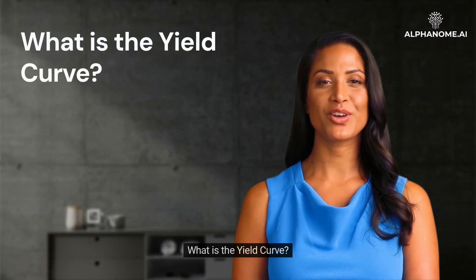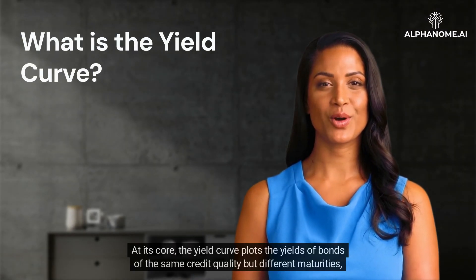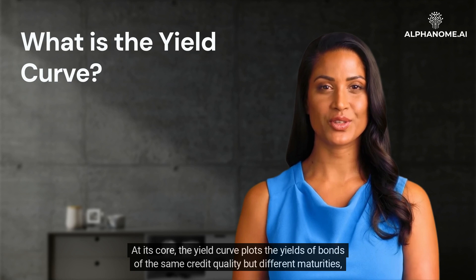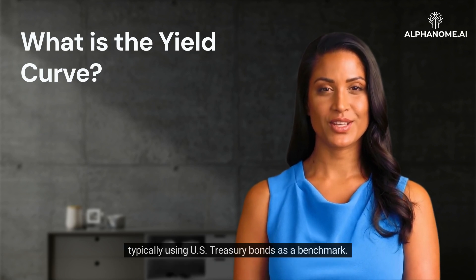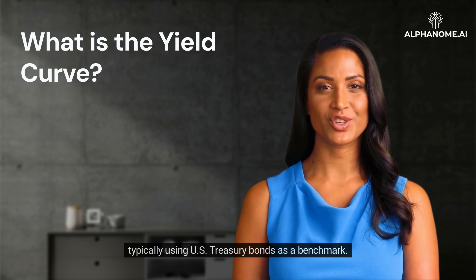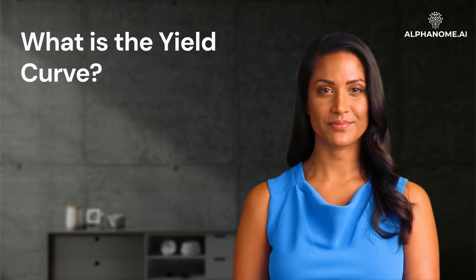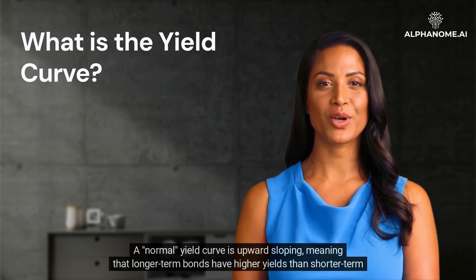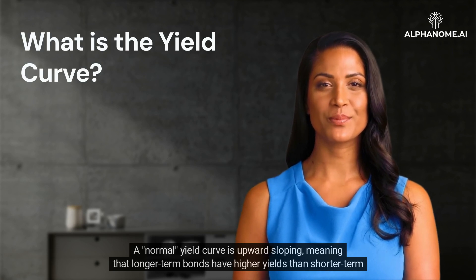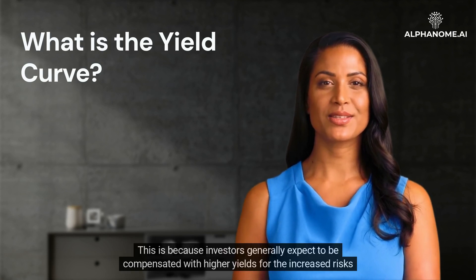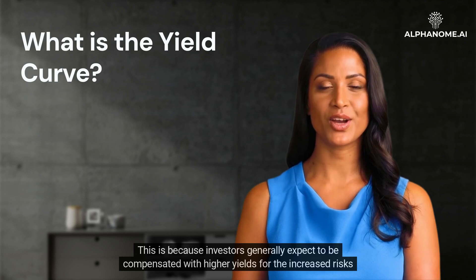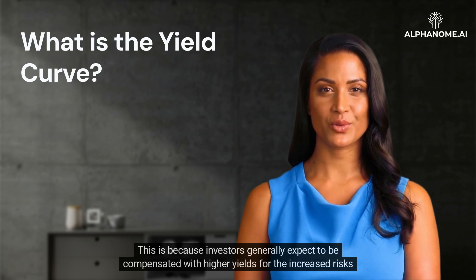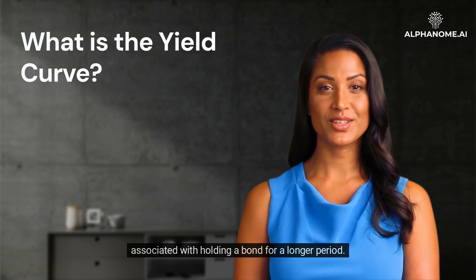What is the yield curve? At its core, the yield curve plots the yields of bonds of the same credit quality but different maturities, typically using US Treasury bonds as a benchmark. A normal yield curve is upward sloping, meaning that longer-term bonds have higher yields than shorter-term bonds. This is because investors generally expect to be compensated with higher yields for the increased risks associated with holding a bond for a longer period.